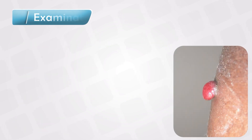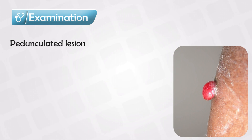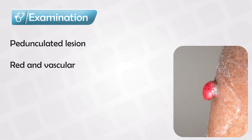The lesion itself pedunculates outward, which means that it can have a stalk and it can protrude outward and lay down. These pedunculated lesions are very red because they are rich in blood supply — they are after all capillary hyperproliferated cells.